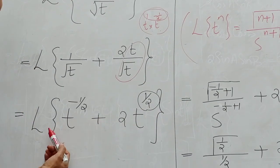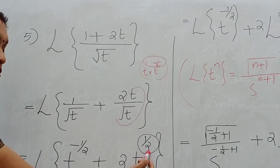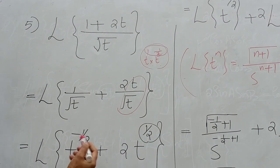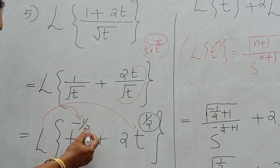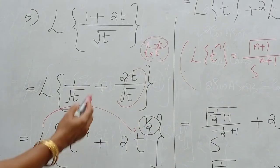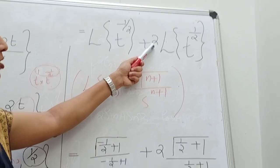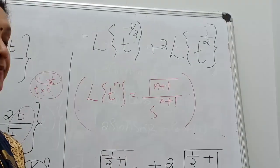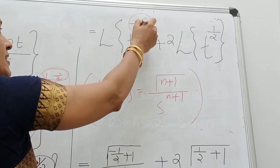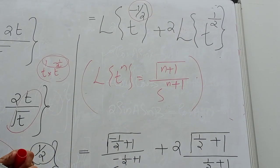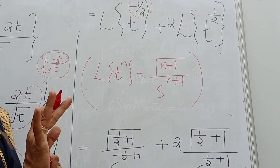Now we find the Laplace transform of T raised to minus half plus 2 times T raised to half, applying linearity to split into L of T raised to minus half plus 2 into L of T raised to half. For T raised to minus half, the power is minus half — a fraction — so we can't apply L of T raised to N equals N factorial by S raised to N plus 1, since factorial is not applicable for fractional powers.